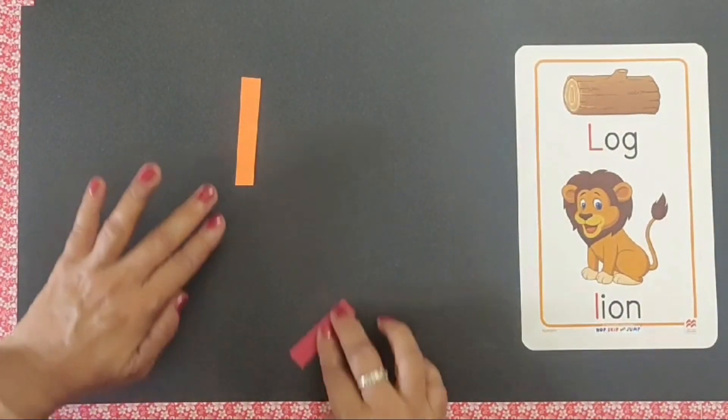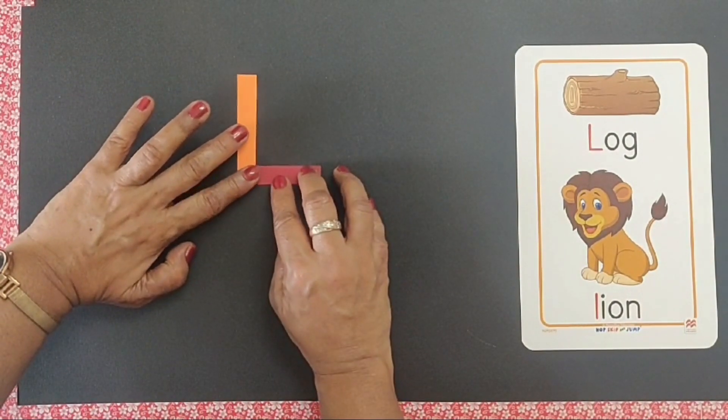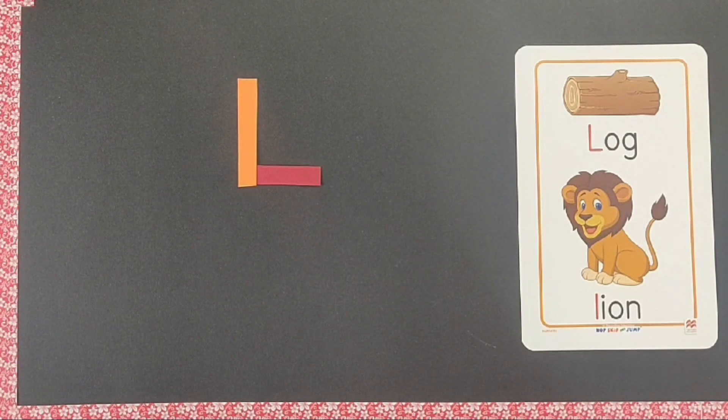Now take a bigger one, a smaller one like this. L. L says luh, L for log.